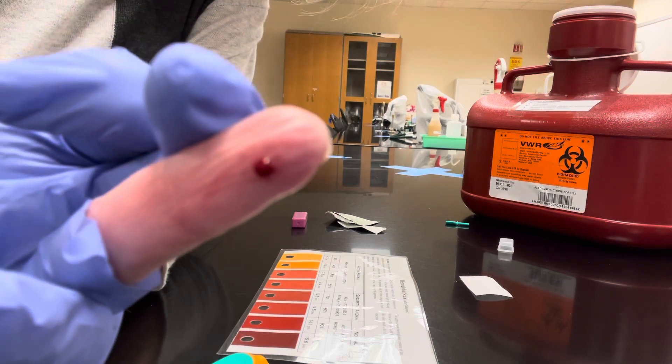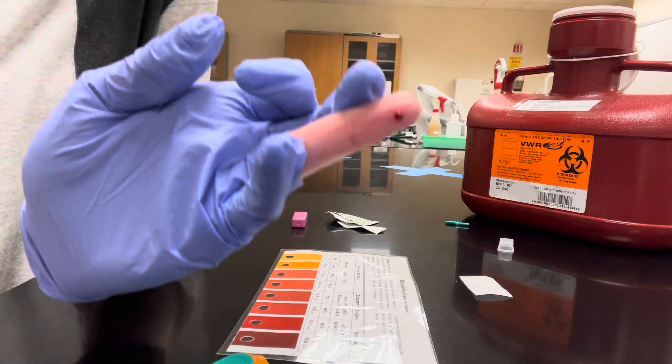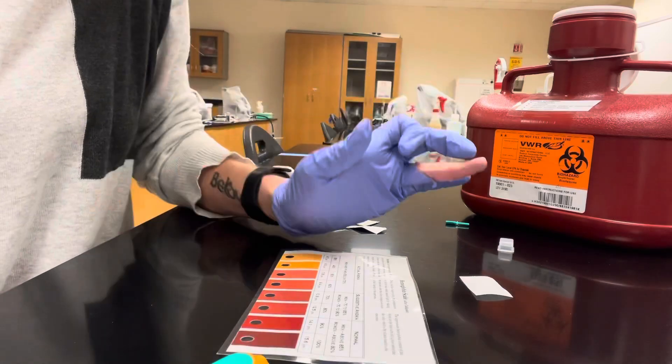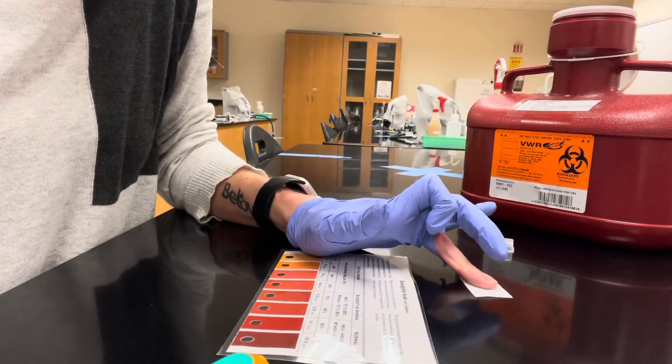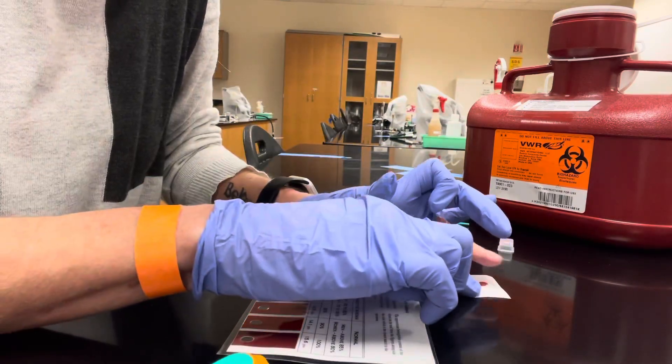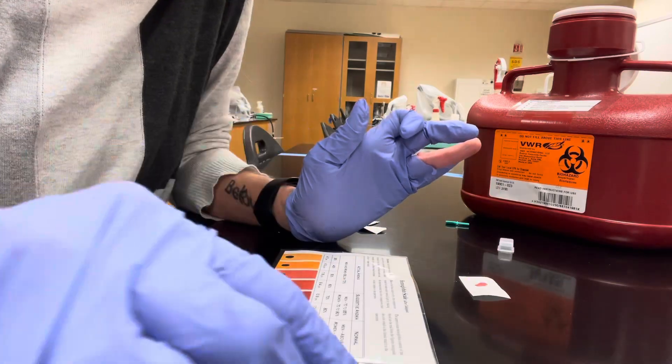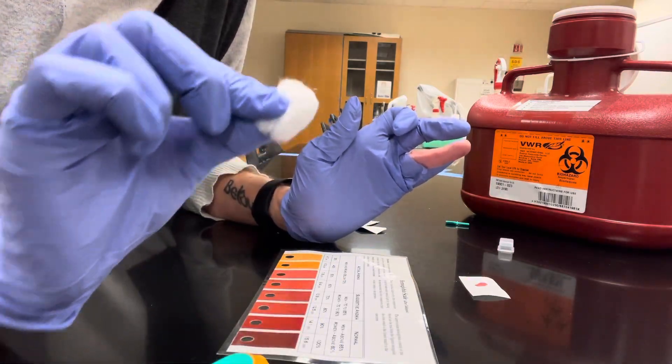Once you have a decent sized drop of blood, you just take your finger and touch it to the Talqvist paper. It might be a little sticky. Go ahead and tend to your wound while it's drying.